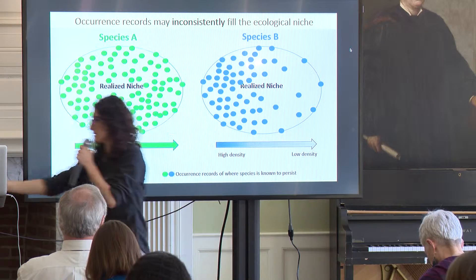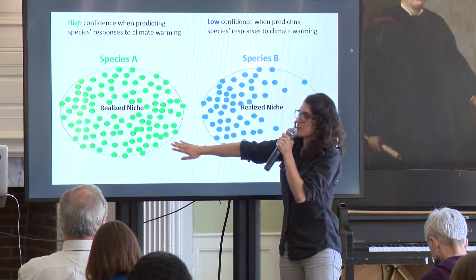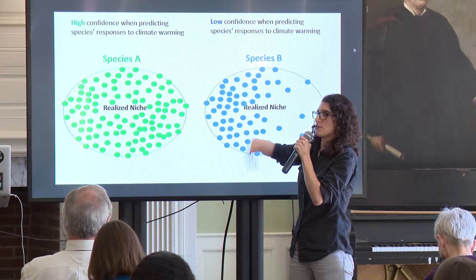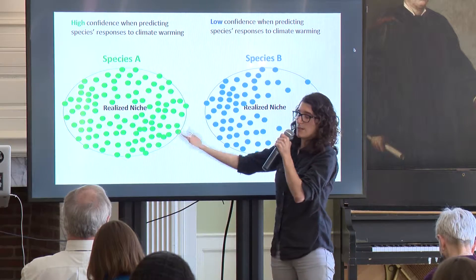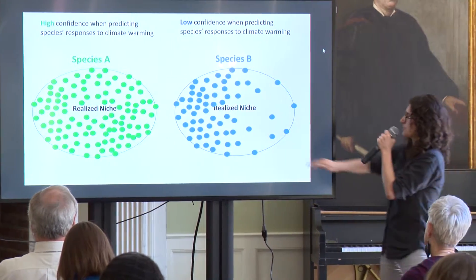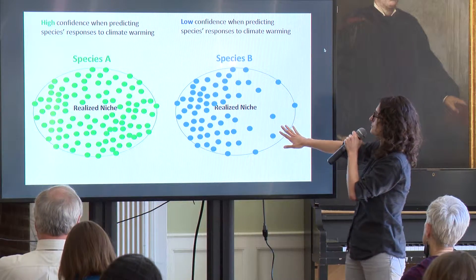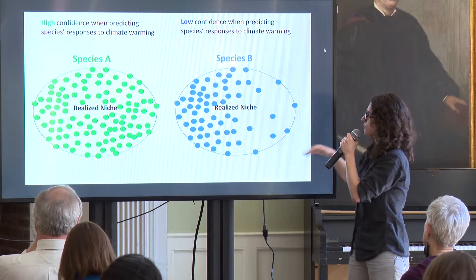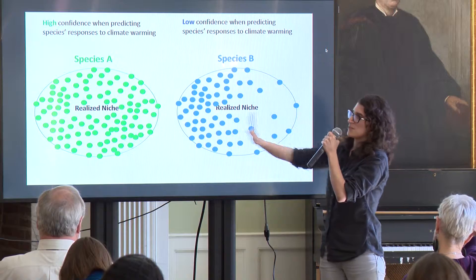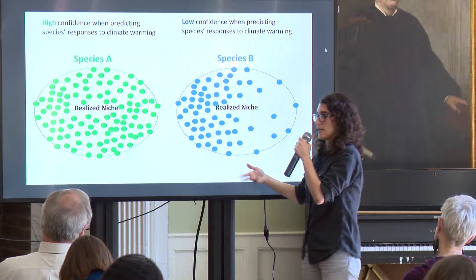So what does that mean? If we have Species A, we can be very confident that we're doing a really good job at predicting the species' climatic tolerances, and therefore their range dynamics in response to global warming. But for Species B, we will have less confidence in determining species responses. We were interested in developing a framework that would let us know whether we have Species A or Species B, in a standardized approach applicable to multiple species.